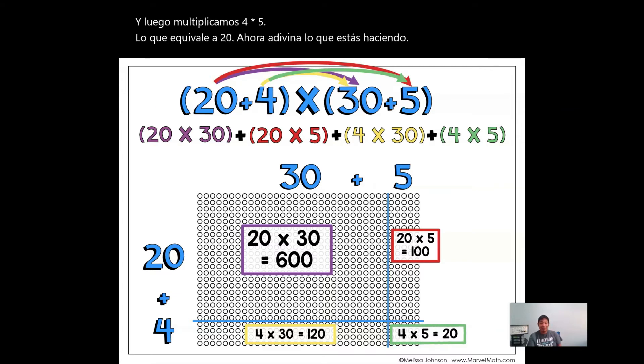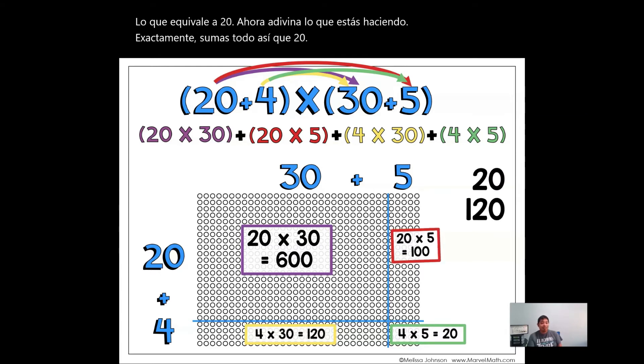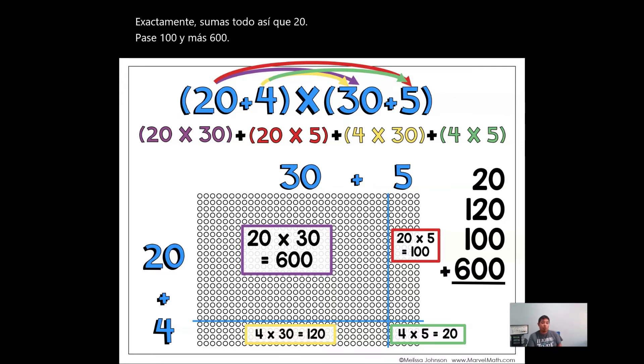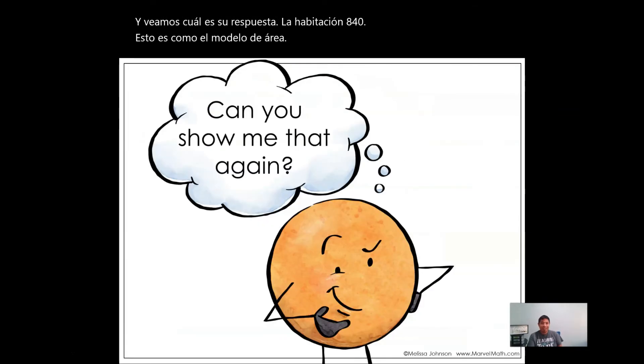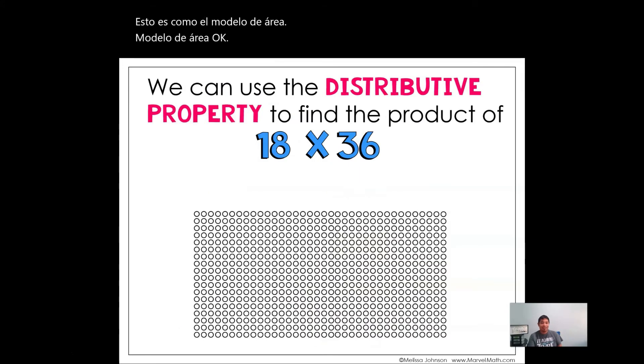Now, guess what you do? Exactly. You add up everything. So 20 plus 120 plus 100 and then plus 600. And let's see what our answer is. 840. This is just like the area model. Excellent. So let's do that again. We're going to use the distributive properties.